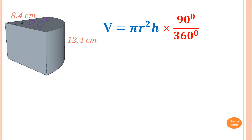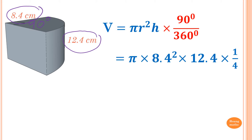All we need to do is substitute the values in. The radius is 8.4 centimeters and the height is 12.4 centimeters. Substituting into the formula gives me 687.1794 and so on.